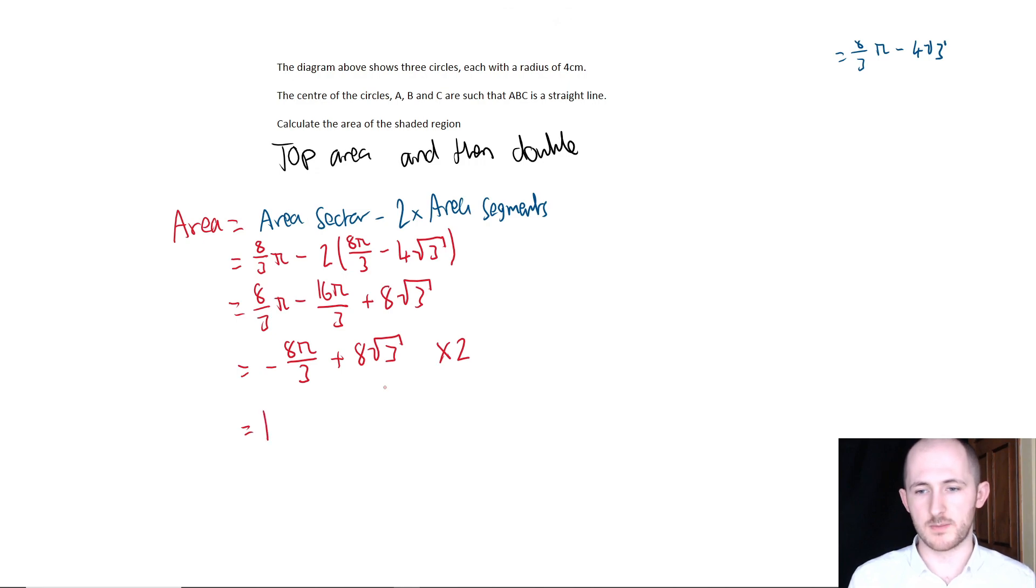I'm actually going to move the third to the front just because it looks a bit nicer when you have the positive in the front. 8 times 2 is 16, and then you're going to have minus 16 pi over 3 for your final answer.